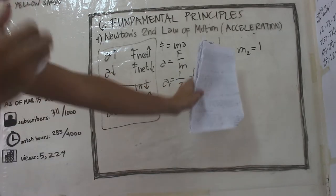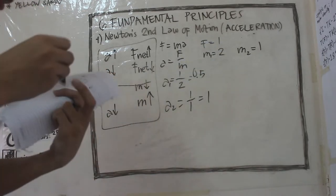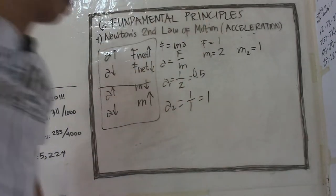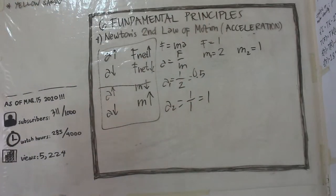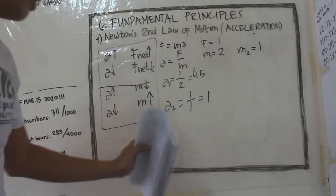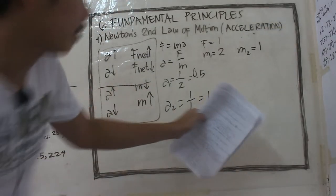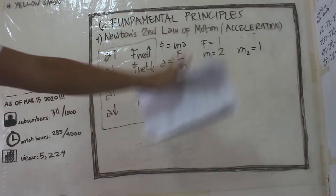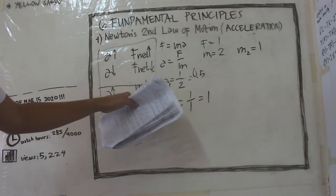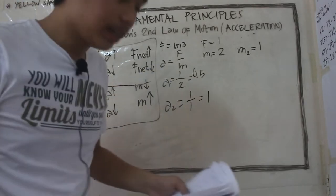As you can see, kung malalakihin natin yung mass natin, liliit yung acceleration. While kung paliliitin natin yung mass natin, tataas yung acceleration natin. So acceleration and mass are inversely proportional.